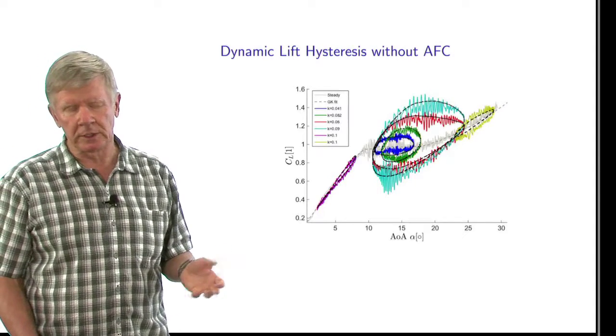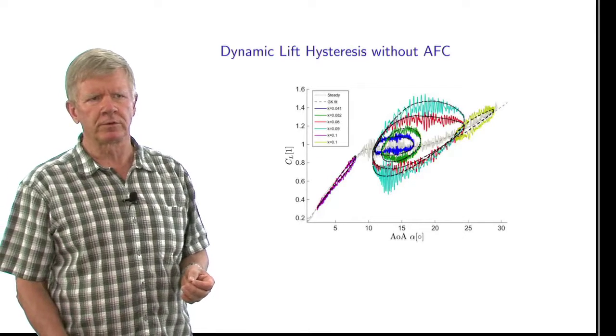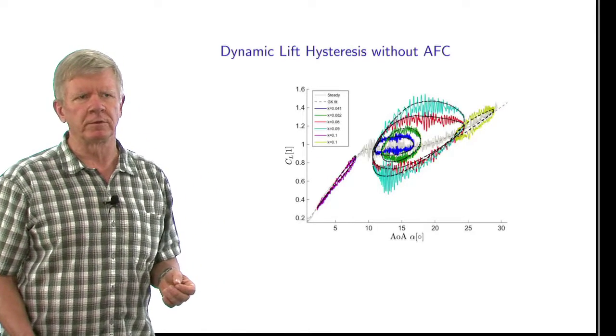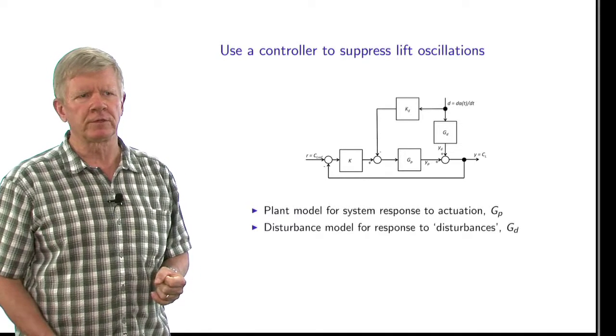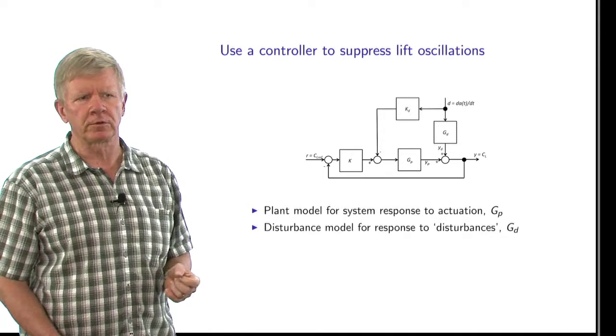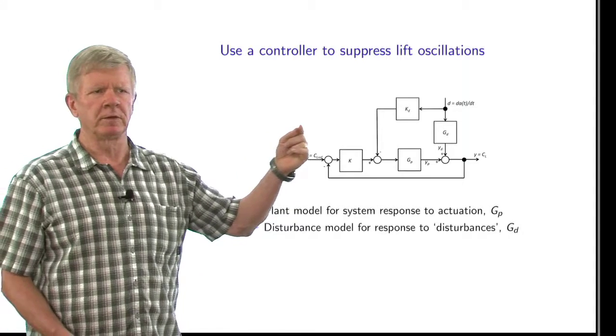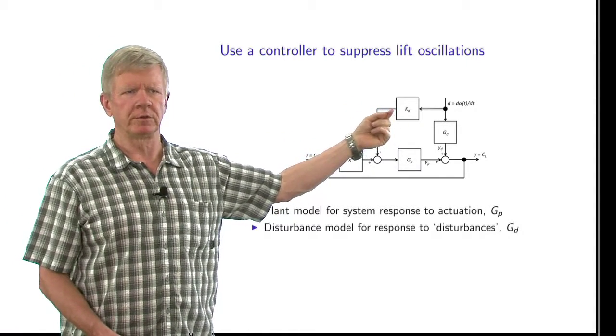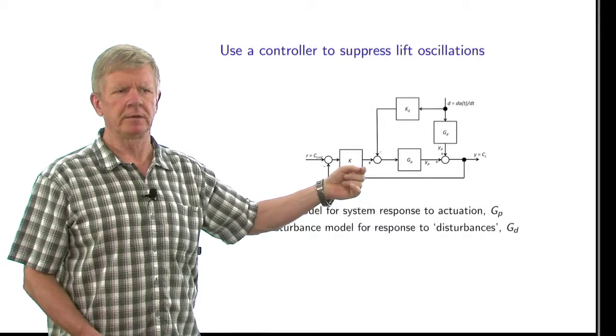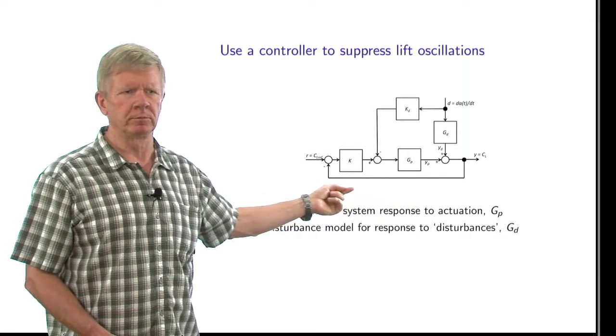And what we would like to do is, with active flow control, reduce the size of those hysteresis loops. And we would do that using a closed-loop control system, a system that uses a feed-forward loop, as shown here, and possibly a feed-back loop, shown on the bottom.